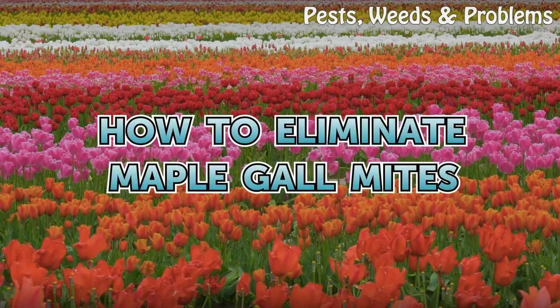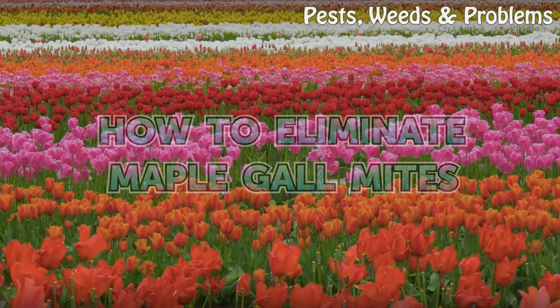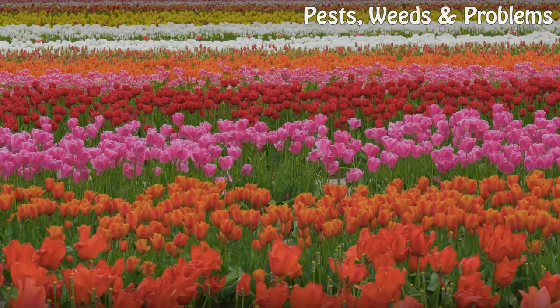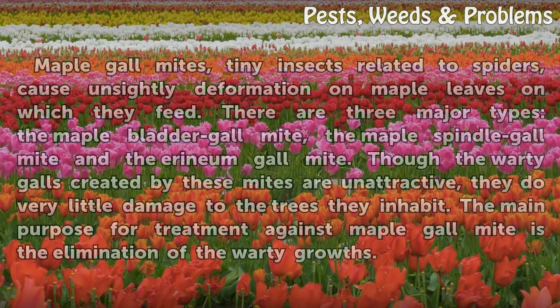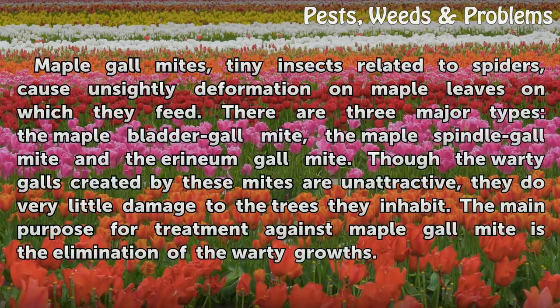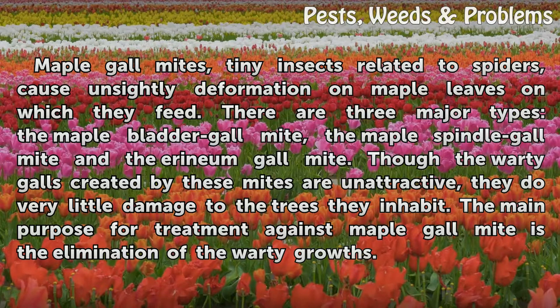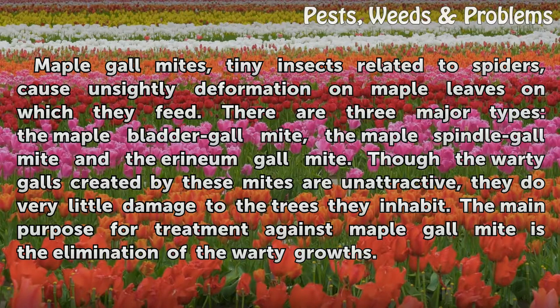Maple gall mites are tiny insects related to spiders that cause unsightly deformation on maple leaves on which they feed.